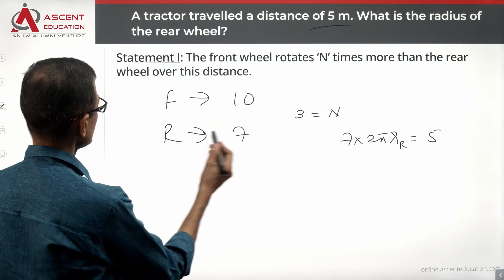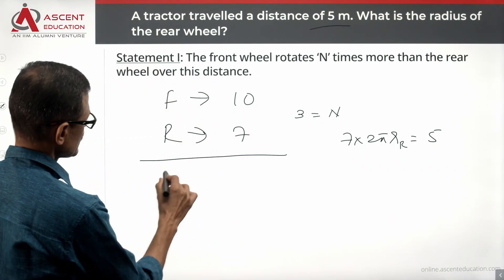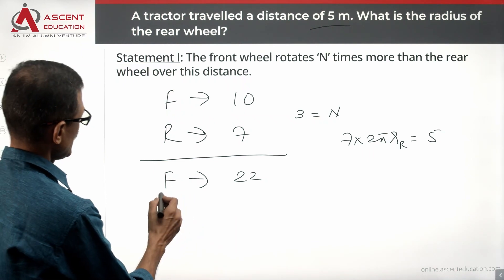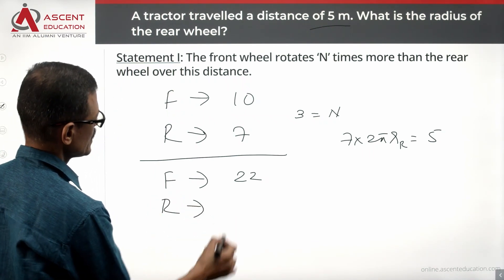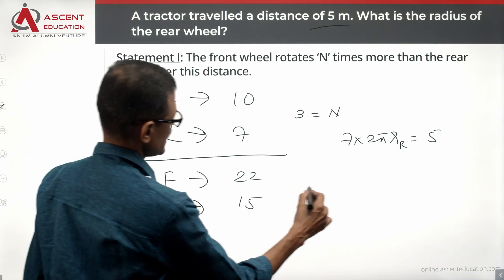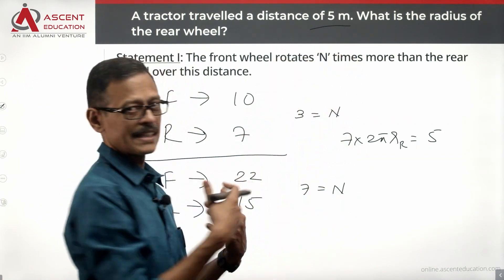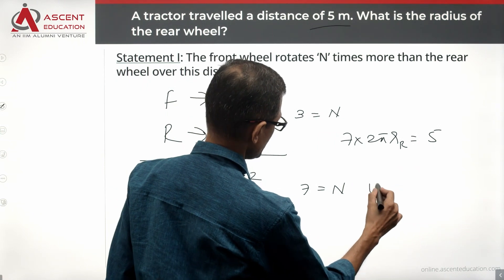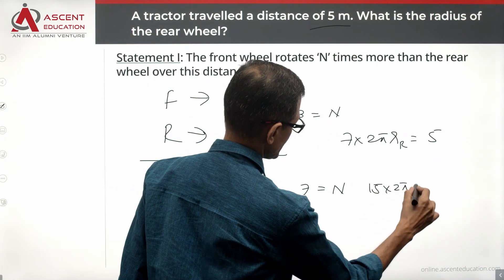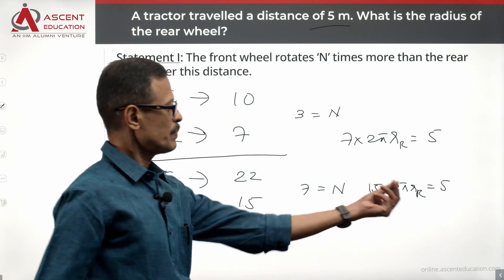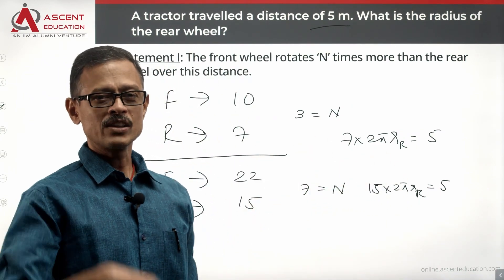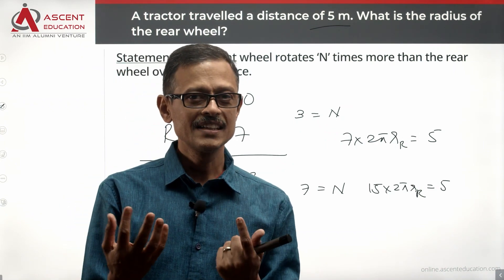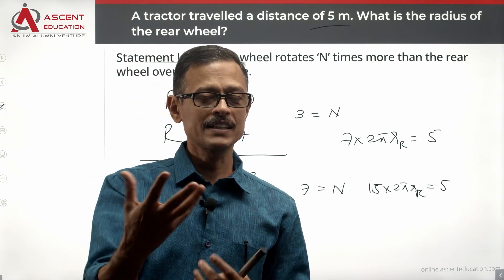But it could very well be another kind of thing also. So n could be equal to 7, or n could be equal to 3.